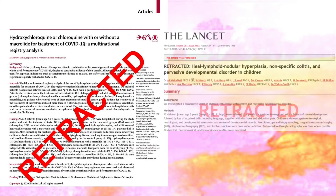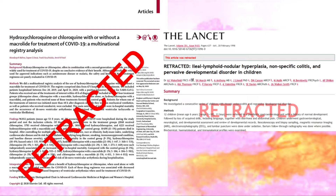Another well-known example is the article titled something like 'ileal lymphoid nodular hyperplasia, non-specific colitis and pervasive developmental disorder in children' — the article that tried to link the MMR vaccine to autism in young children. It was accepted for publication. Many other scientists working in the same area later found flaws, including that the study's funding came from lawyers suing vaccine manufacturers, and it was retracted. Some say this shows peer review doesn't work; you could also argue it shows that it does, because once published to the wider scientific community, they were able to take it down — adding another layer of protection.